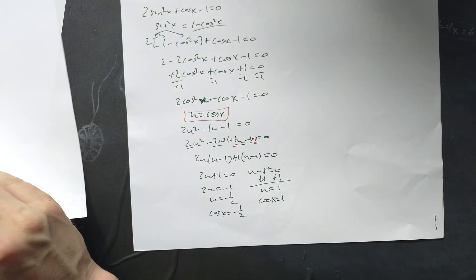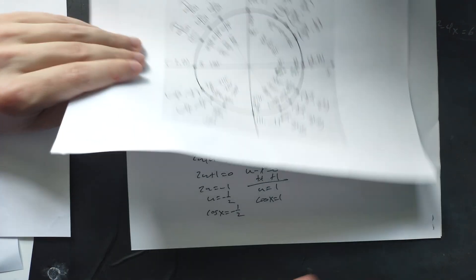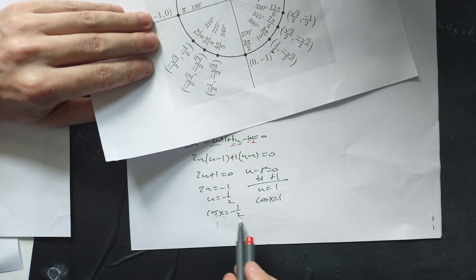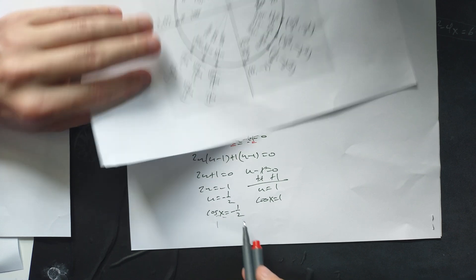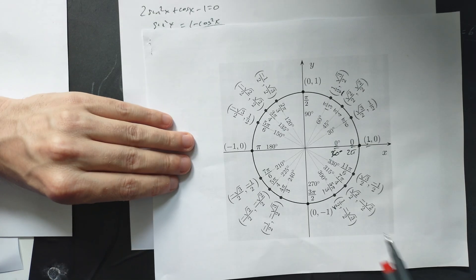To solve this, just use a copy of the unit circle right here. So you're looking for cosine x equals negative 1 half. That's like saying that the x coordinate on the unit circle is equal to negative 1 half. So where does that occur? Look very carefully.